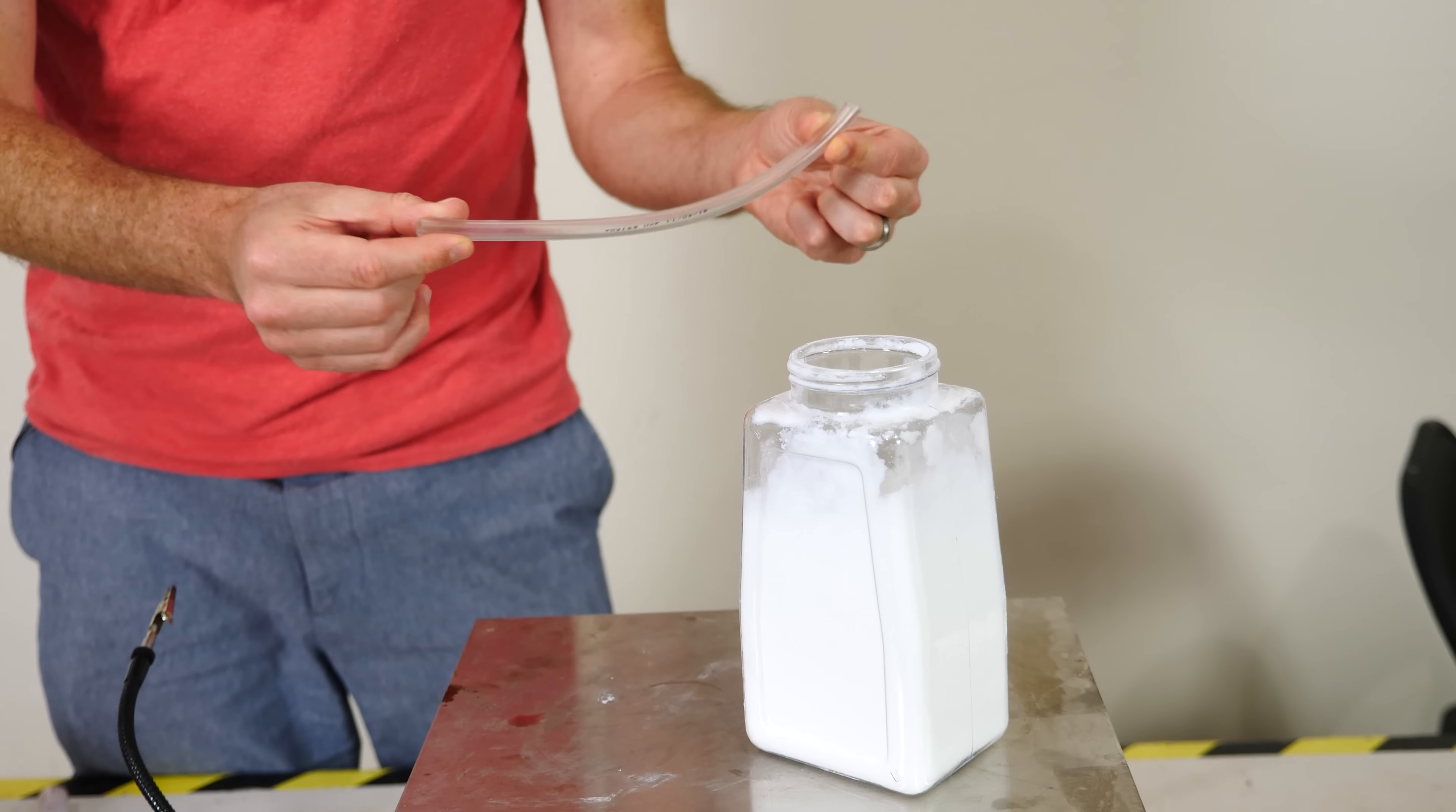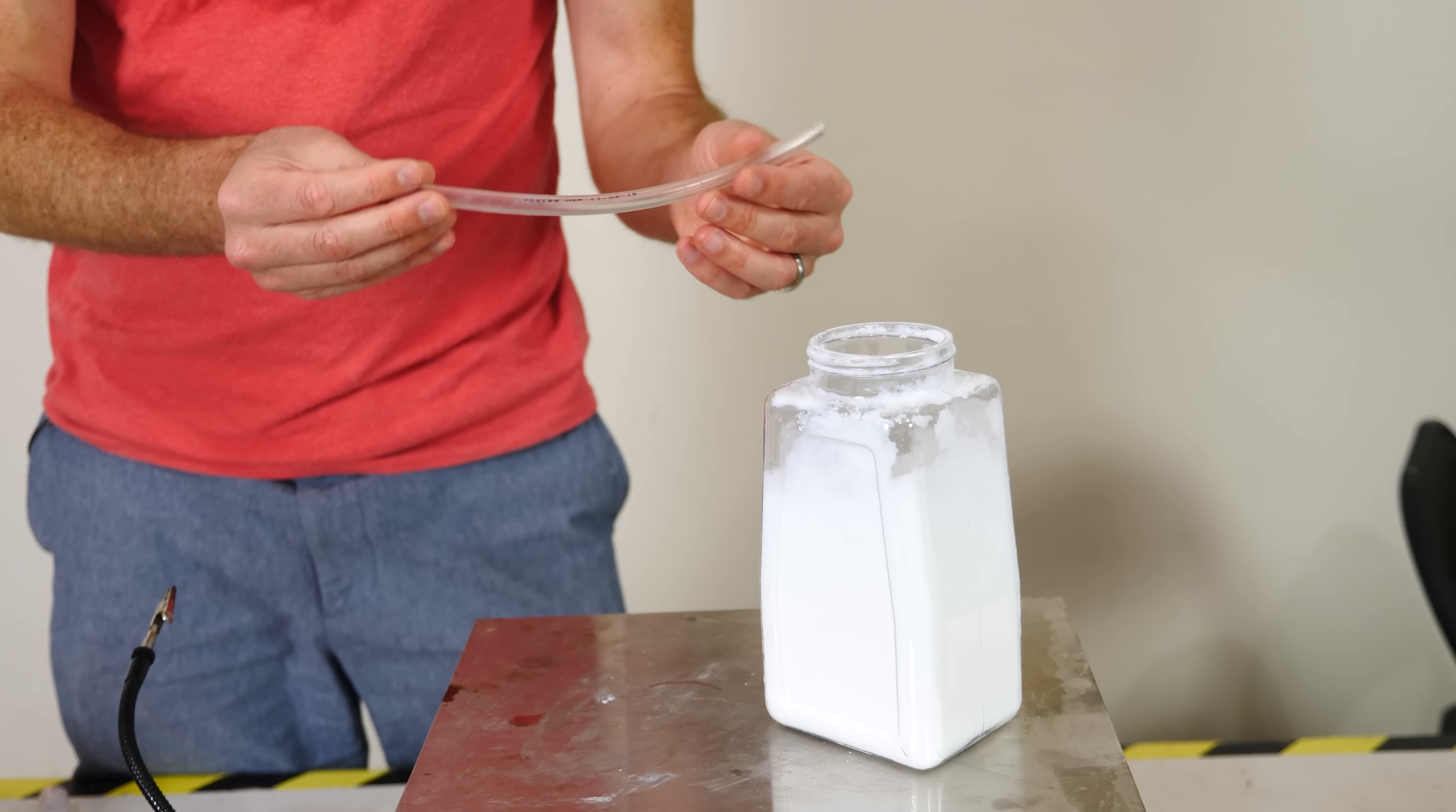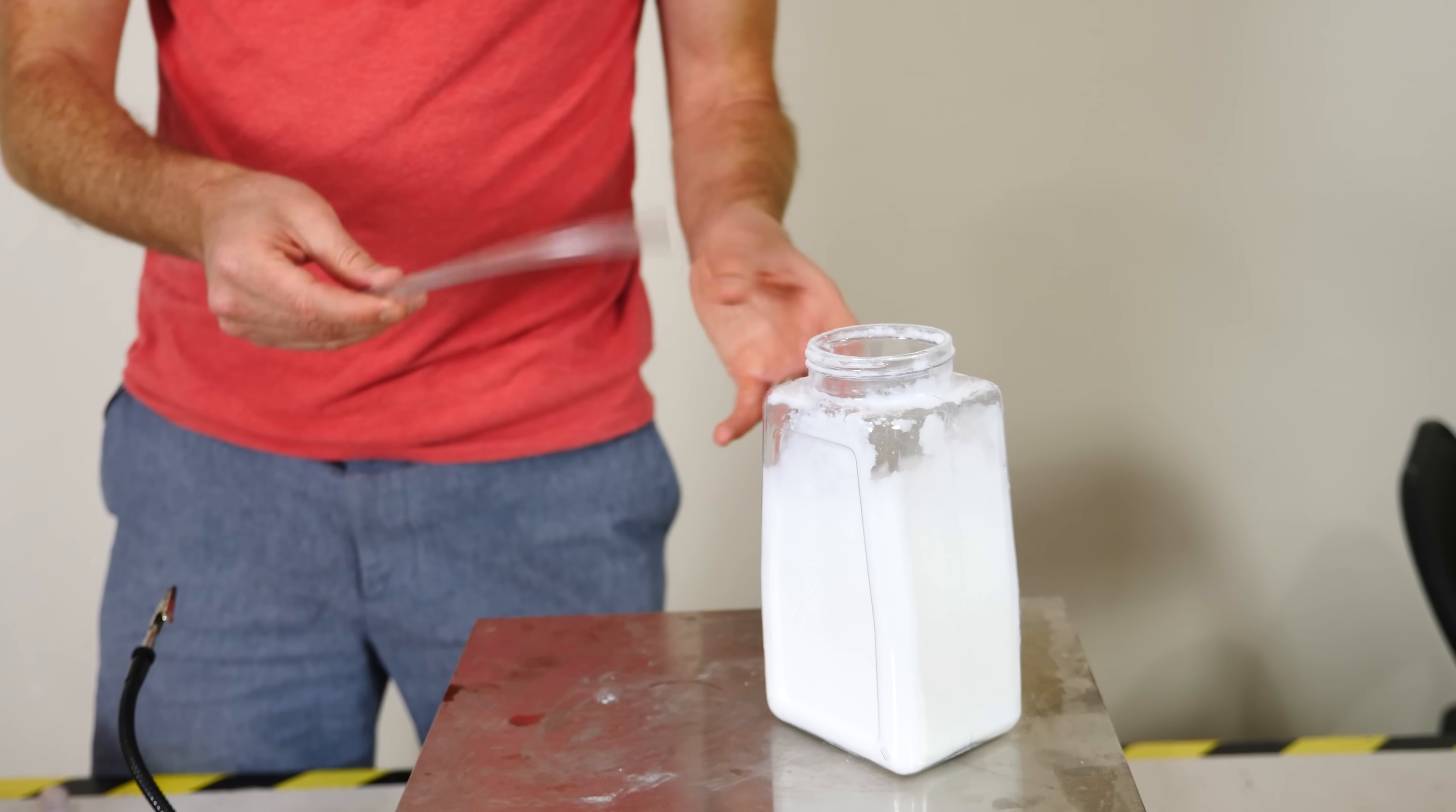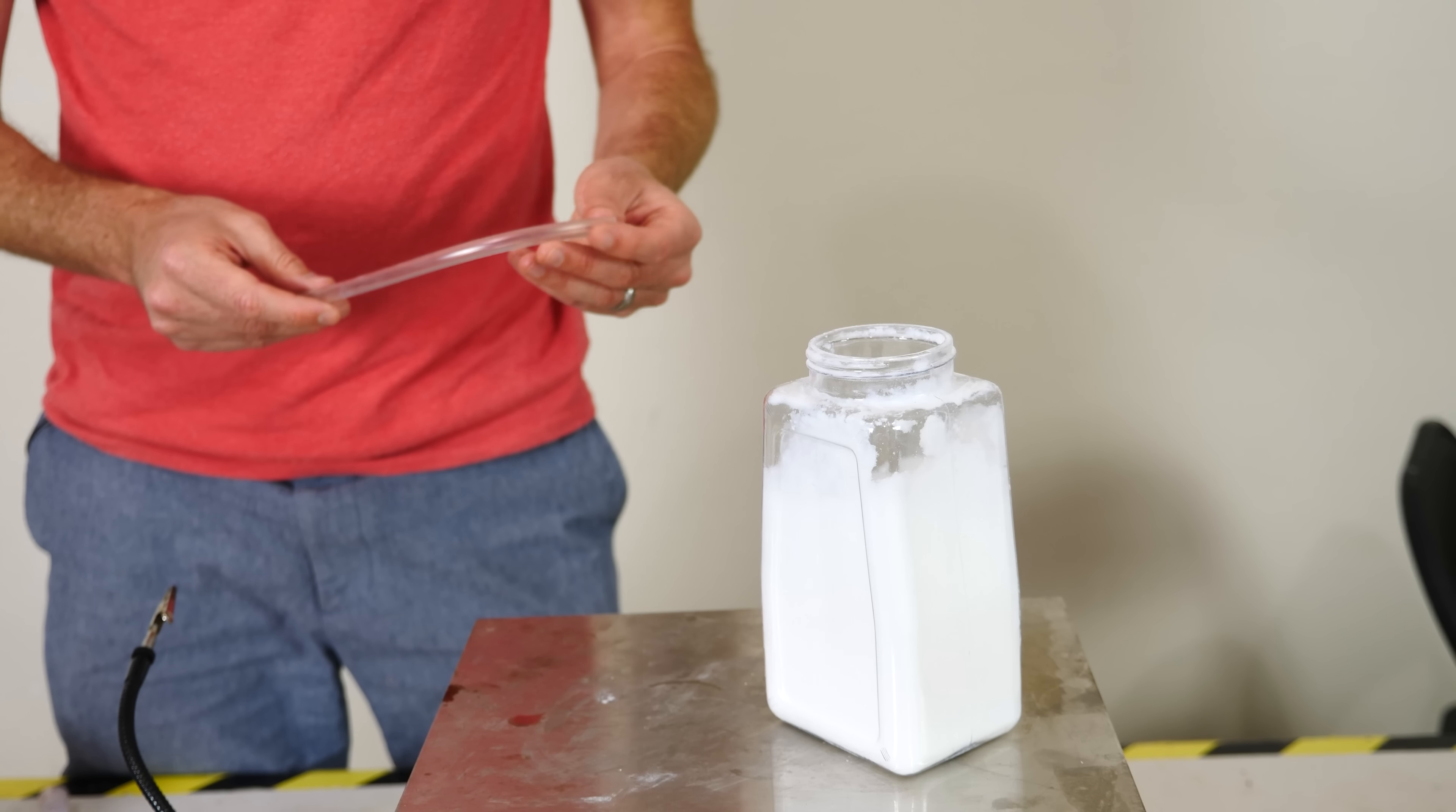In order to turn this into a hydrophobic straw I'm going to be coating it with fumed silica. Now fumed silica has a cool ability to make anything that it touches hydrophobic.